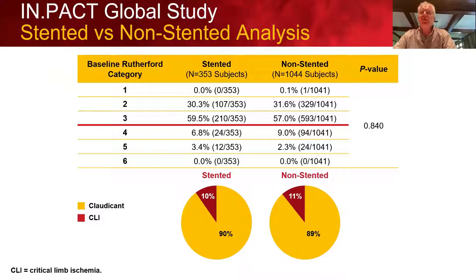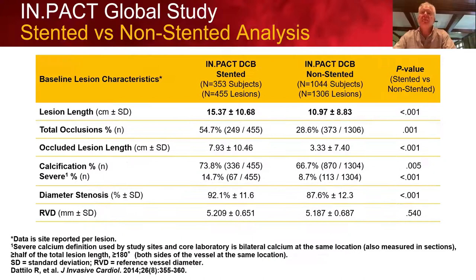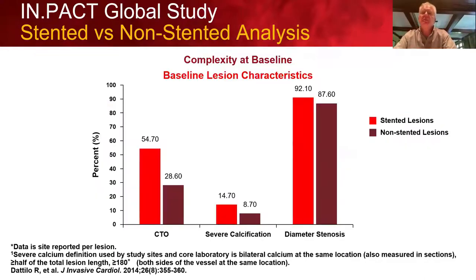Baseline Rutherford class was about 30% class 2, about 60% class 3, and about 7% to 9% class 4 in each group. A few patients with Rutherford class 5 were enrolled despite the protocol. Baseline lesion characteristics showed that lesion length, total occlusions, occluded lesion length, severe calcification, and diameter stenosis were all higher in the stented group, while reference vessel diameter was similar — just more complex disease in the stented group.